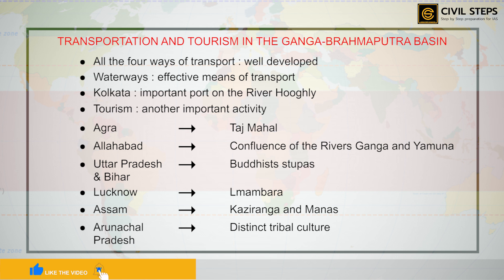In this chapter, we discussed two basins: first, the Amazon basin, and second, the Ganga-Brahmaputra basin.